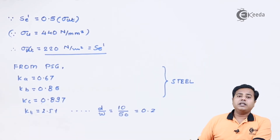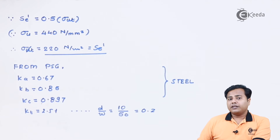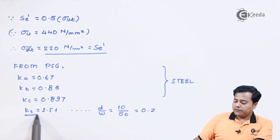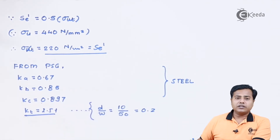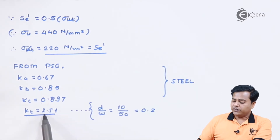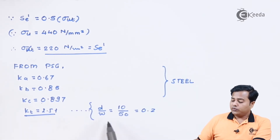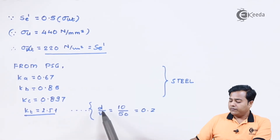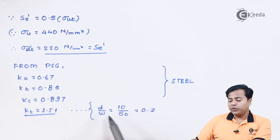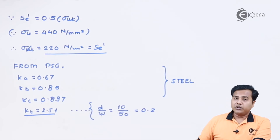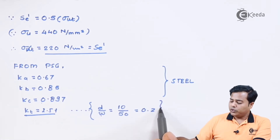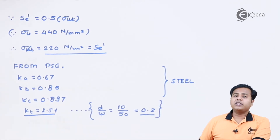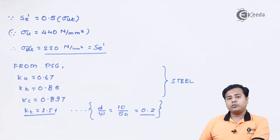The next value needed is the stress concentration factor KT. For this plate with a circular hole, we calculate the ratio d/w, where w is the width (50 mm) and d is the diameter of the hole (10 mm), giving d/w = 0.2. Referring to the PSG data book for a ratio of 0.2, the stress concentration factor KT comes out to be 2.51.